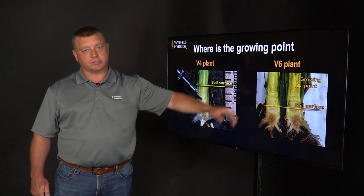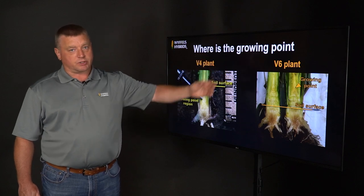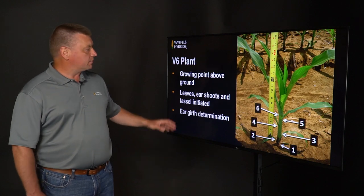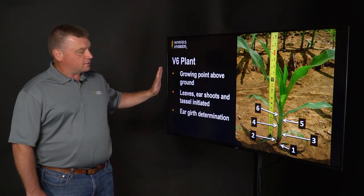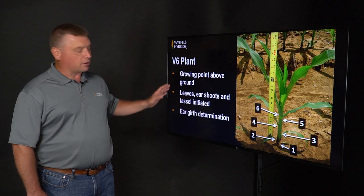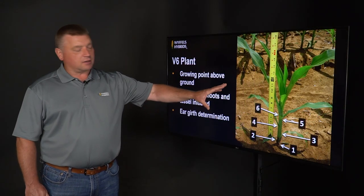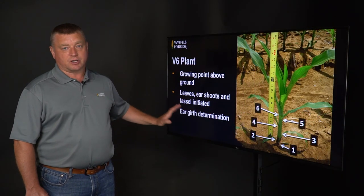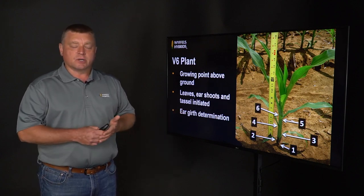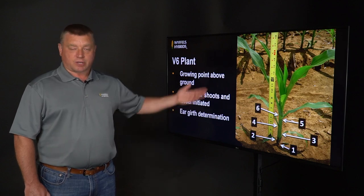When we get into the V6 growth stage, the growing point is more exposed to environmental conditions. V6 is a very important stage in a corn plant's life cycle. The growing point is above ground, and all of the leaf tissue, ear shoots, and the tassel have been determined and initiated in a V6 corn plant. Ear girth is also being determined at this point. So we're now talking about yield components — things that directly affect yield. Environmental conditions that can affect that V6 corn plant are really starting to impact yield. This is also why many herbicides have V6 growth-stage application restrictions.